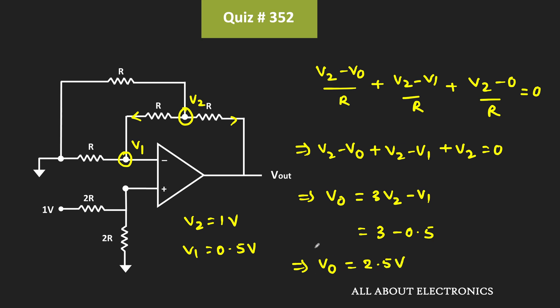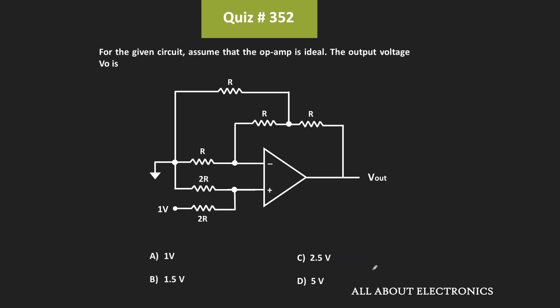So in this way, we found the output voltage for the given circuit, which is equal to 2.5V. From this we can say that for the given question, option C is the correct answer.